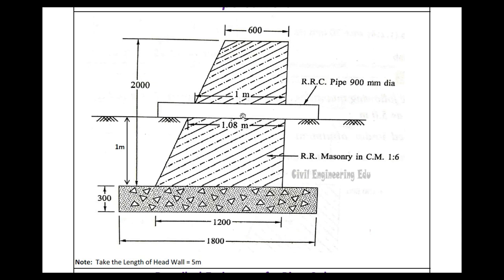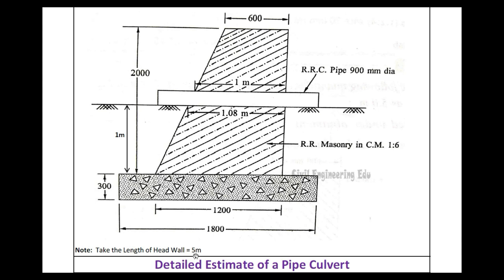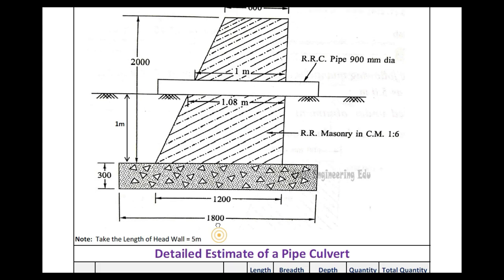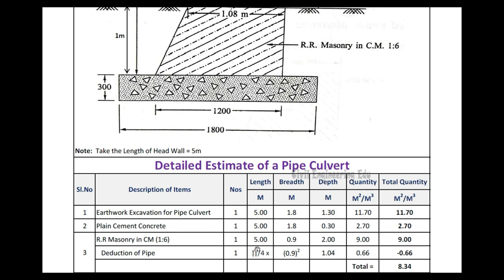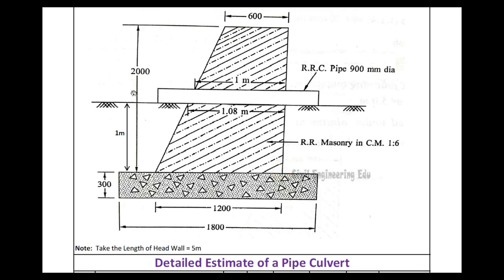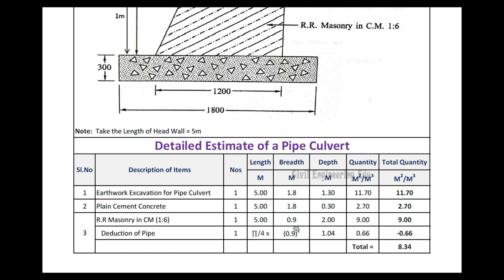For RR masonry — the hatched portion in the figure — length is 5 meters. For breadth, the bottom width is 1.2 meters and top width is 0.6 meters, so we take the average: 1.2 plus 0.6 equals 1.8, divided by 2 equals 0.9 meters. Depth of masonry is 2 meters. So length 5 meters × breadth 0.9 meters × depth 2 meters gives the RR masonry quantity.